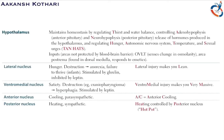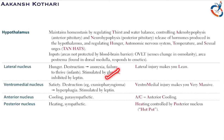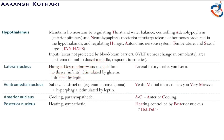The first specific nucleus is the lateral nucleus, which controls hunger. It is stimulated by ghrelin and inhibited by leptin. Destruction of the lateral nucleus causes anorexia and failure to thrive in infants. Remember: lateral nucleus injury makes you lean.